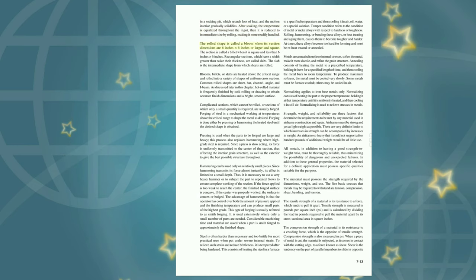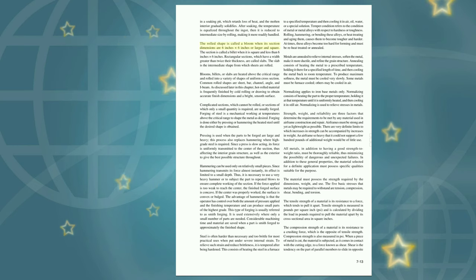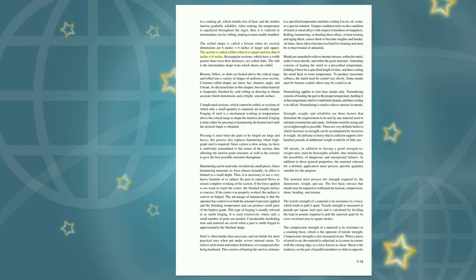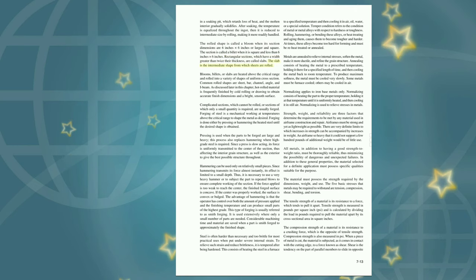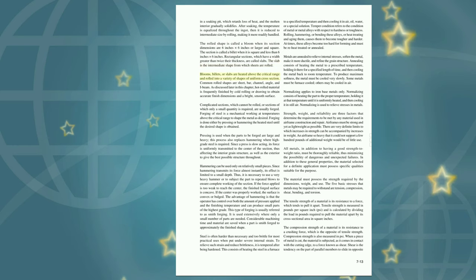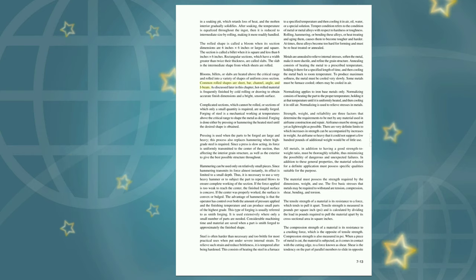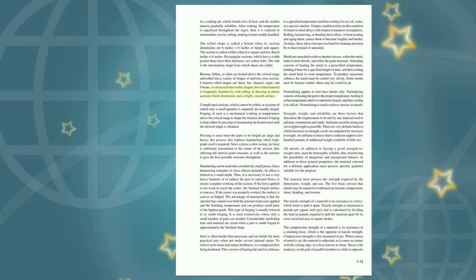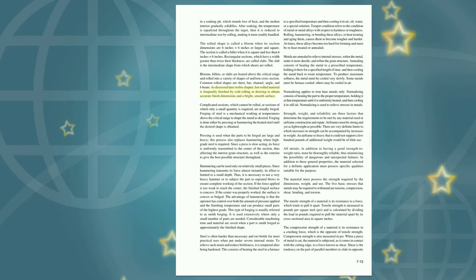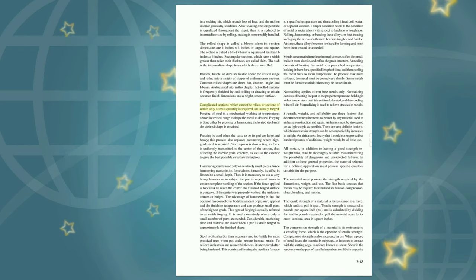The rolled shape is called a bloom when its section dimensions are 6 inches by 6 inches or larger and square. The section is called a billet when it is square and less than 6 inches by 6 inches. Rectangular sections with a width greater than twice their thickness are called slabs. Blooms, billets, or slabs are heated above the critical range and rolled into a variety of shapes of uniform cross section, including sheet, bar, channel, angle, and I-beam. Complicated sections or those of which only a small quantity is required are usually forged. Forging of steel is mechanical working at temperatures above the critical range to shape the metal as desired, done by pressing or hammering the heated steel.